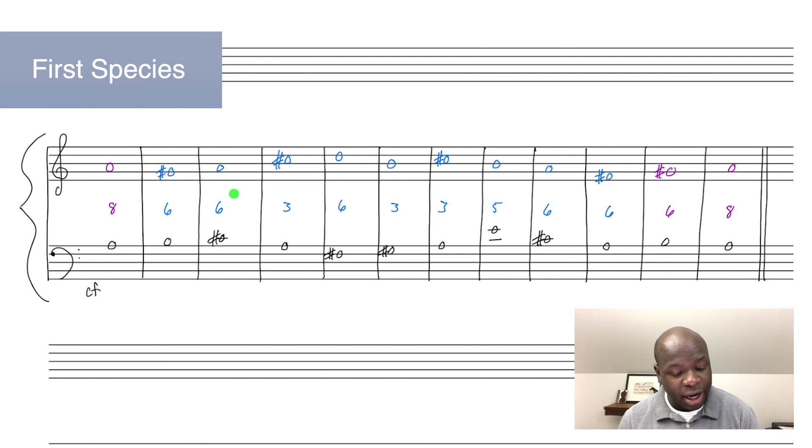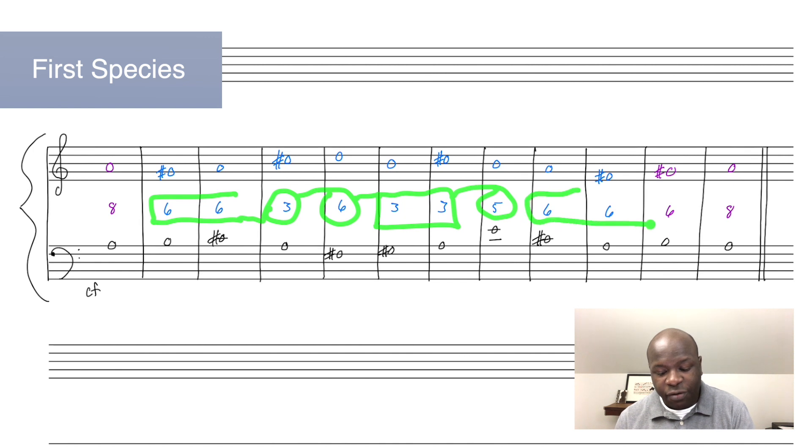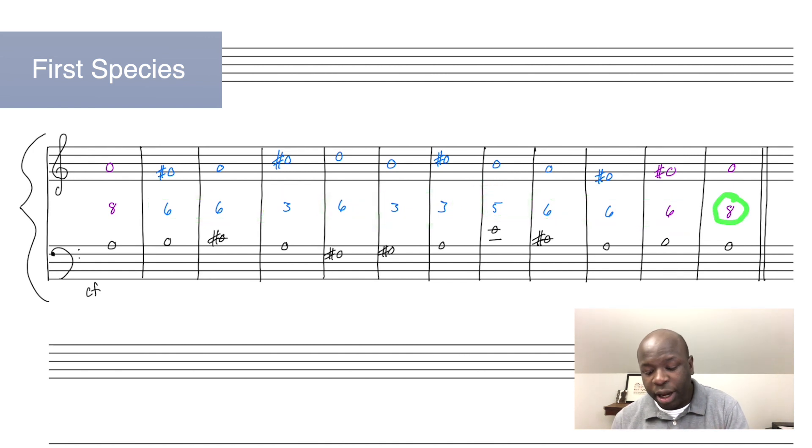So I've tried to follow that here. I've got two sixths, and then I break the pattern by throwing in a third. And then I go to a sixth here, and then I have a couple of thirds here. And then I get to a fifth here. And then I do have three sixths in a row here, which is fine, but that's my limit. So I just break it here with the octave. And of course, that makes sense because this is the penultimate interval. It should be a sixth, which should then lead to an octave.